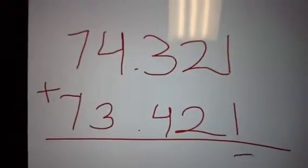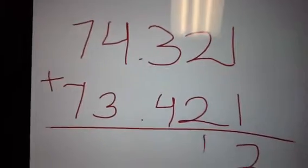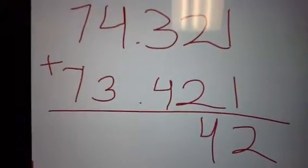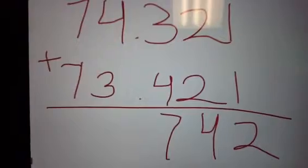So what you do is add 1 plus 1 which is 2. 2 plus 2 is 4. 3 plus 4 is 7.